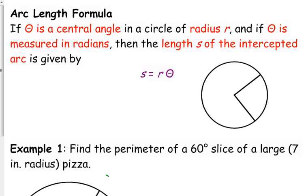Alright, so like I said, easy formula: S equals R theta. S is the arc length.